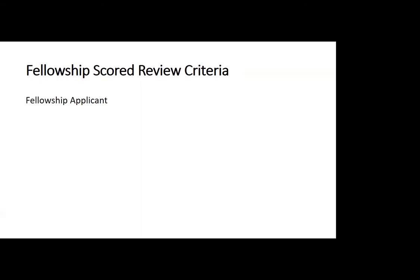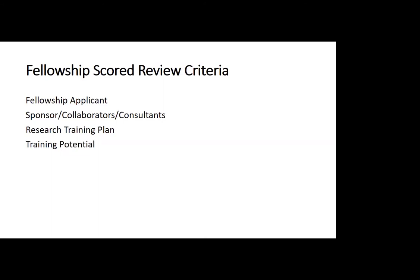These are the areas we actually score. First, the applicant — we list your strengths and weaknesses and give an overall score. Next is your sponsor, the sponsor's collaborators, and different consultants. We'll talk a lot about how critical your mentor is to your overall application. We also look at your research training plan, though we're not supposed to make the sole score of your grant based on that alone. It's supposed to be a totality — you yourself, your sponsor, what you're planning to do, and how great the fit of the research is to your career objective. We also look at training potential and the institutional environment and commitment to training.